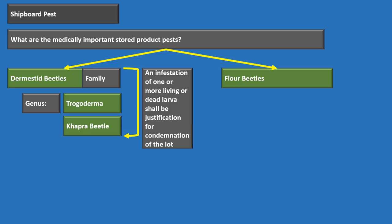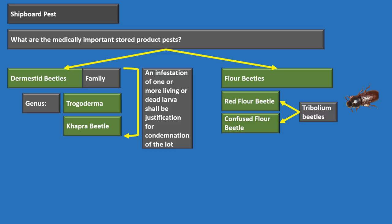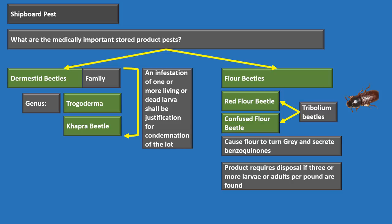The two flour beetles are the red flour beetle and the confused flour beetle — collectively called Tribolium beetles. They are medically important because they turn flour gray and secrete benzoquinones, which are carcinogenic and have a toxic effect on food. Tolerance for Tribolium is three per pound — at three the lot is no good. For all other stored product pests, the threshold is seven or more.